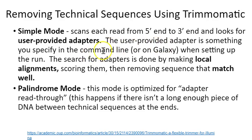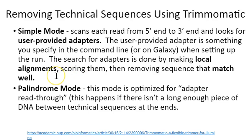The user-provided adapter is something you specify in the command line. You can also do this on the online platform Galaxy and in other places, when you're setting up a Trimmomatic run or execution. The search for adapters is done by making local alignments and scoring them. If you don't tell it what to look for, it's not going to get a good alignment with your sequencing data, and therefore you're not going to effectively trim off the technical or adapter sequence.